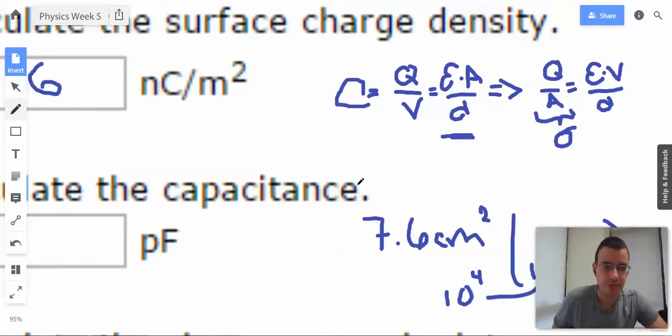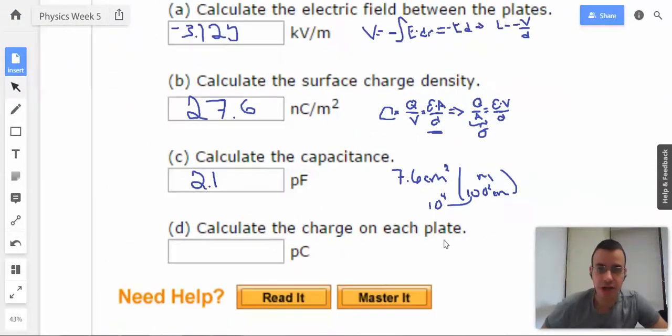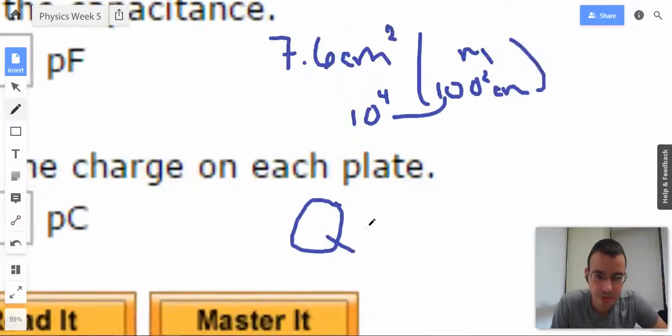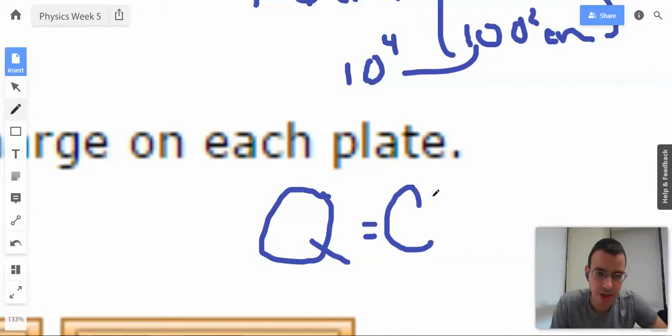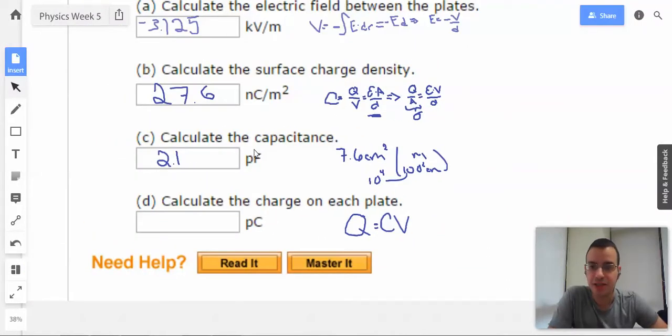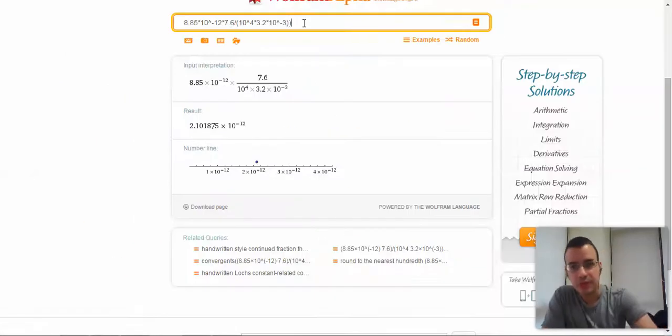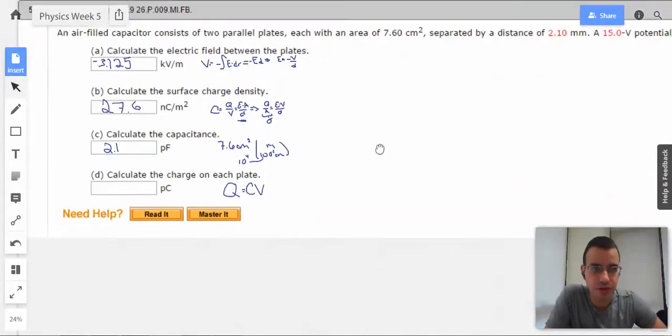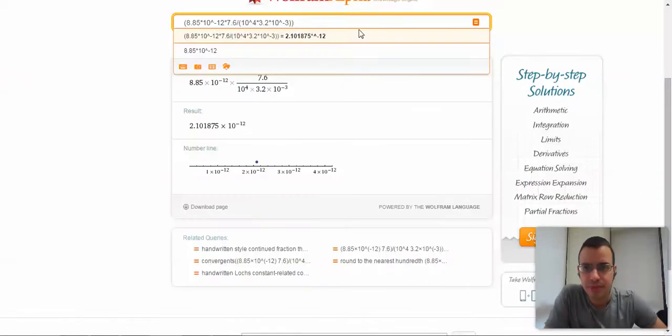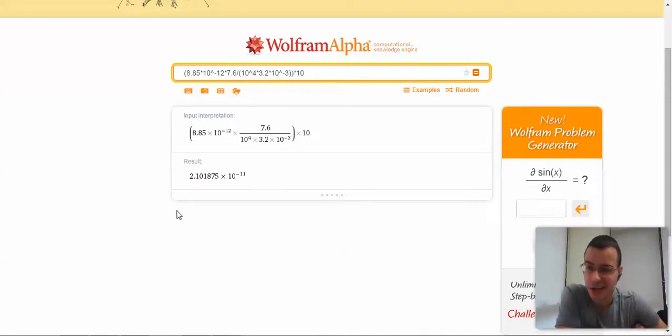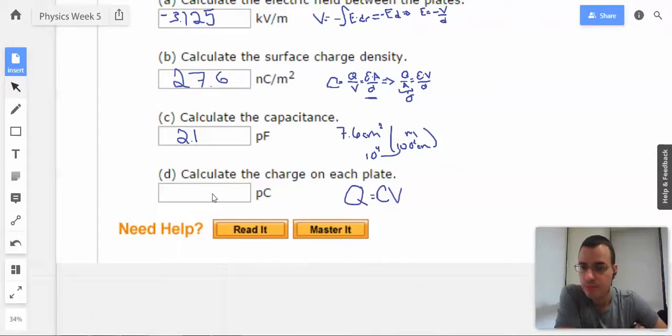Calculate the charge on each plate. There's probably a lot of ways we can do this. I'm going to do Q equals C times V, using this formula right here. We know capacitance, which is what we just had. The voltage is 10.